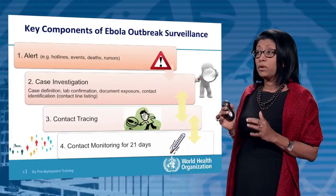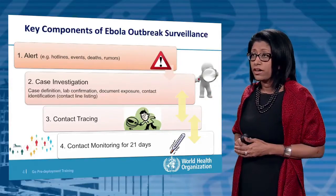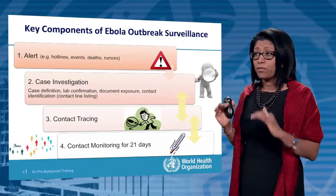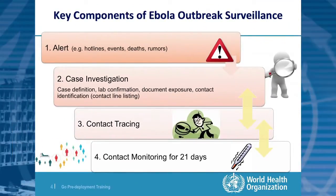Looking at the key components of Ebola outbreak surveillance, there are some big steps which flow from and relate to each other. The first step is about alert — being alerted that there could be a suspected case. The second step, once alerted, is case investigation. The third is contact tracing: tracing the contacts of someone who may have Ebola. And once those people are identified, those contacts have to be monitored for 21 days.